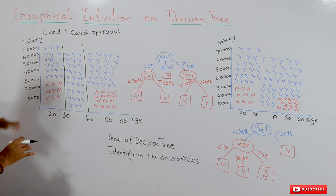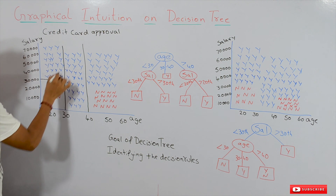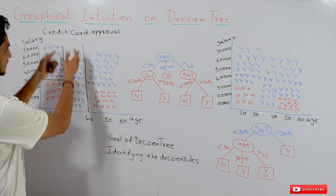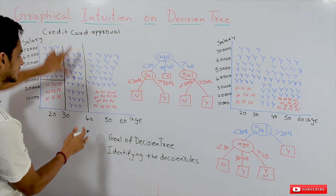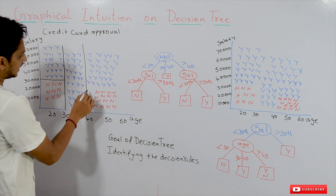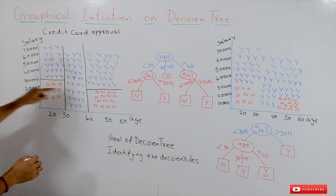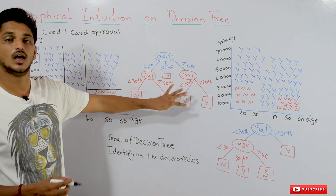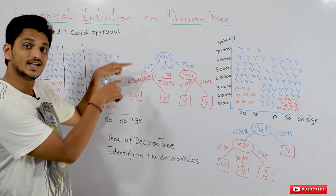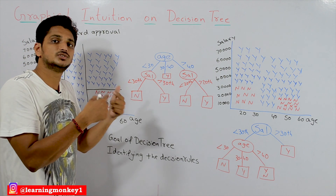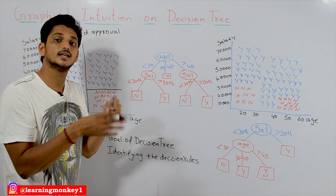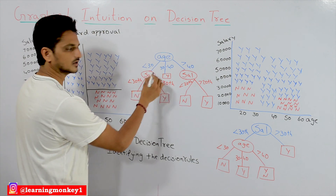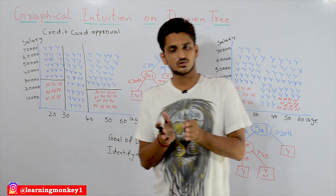In the age less than 30 group, salary greater than 30,000 gives all 'Y'; salary less than 30,000 gives all 'N'. In the 30 to 41 age group, all customers are getting credit cards. Above age 41, salary greater than 20,000 gives all 'Y'; salary less than 20,000 gives all 'N'. That is what a decision tree is — identifying these decision rules, which we then use for prediction on future or testing data.